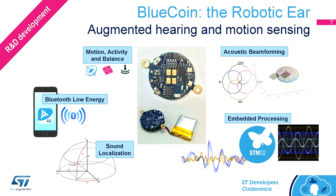This is called BlueCoin. It's an R&D device we will distribute beginning of next year, and it's an example of what can be done to support audio experimentation. When you use one of these platforms, such as BlueCoin, you have a number of software libraries to start with — audio processing libraries, which I will explain in the next part of this talk — and you can put audio processing in cooperation with other sensor and communication libraries, exploiting for example Bluetooth Low Energy.